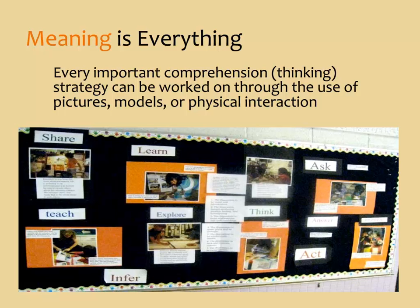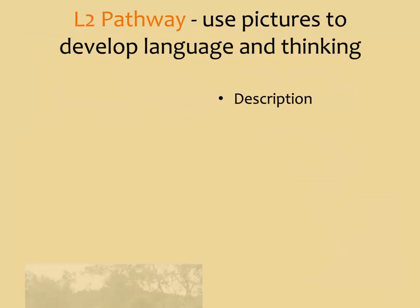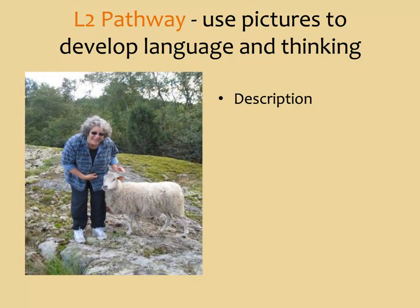Let's use the following picture to demonstrate this. If you were asked to provide a simple description of this picture, you would probably include the fact that a woman wearing sunglasses is bending over and her hand is near the head of a sheep. More details might include the kind and color of clothing she has on, what the terrain looks like, and that there are trees in the background. To demonstrate comprehension of what is going on, you might say that it looks like she is about to pet the sheep, or she has just touched the sheep and took her hand back.